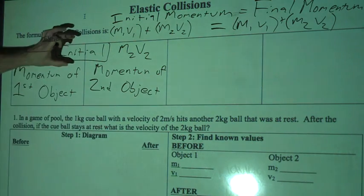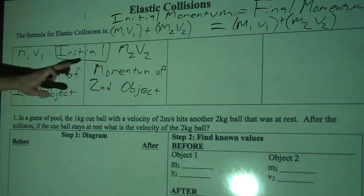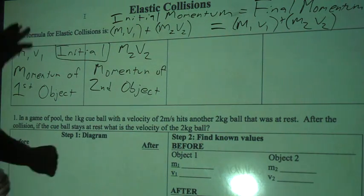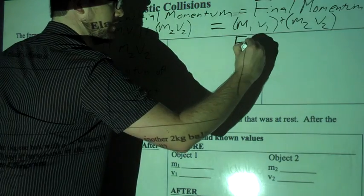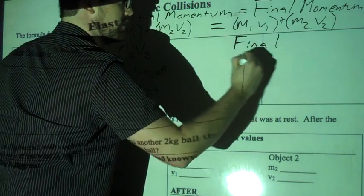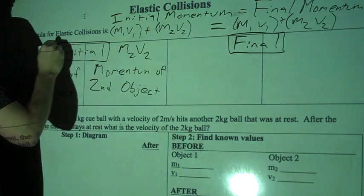So initial means the beginning, and after the initial momentum of the first and second objects, there's going to be a final momentum. So after they hit, in the end, there'll be something else, so we're going to write 'final' up here between these two boxes, top this box off.